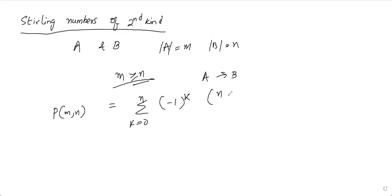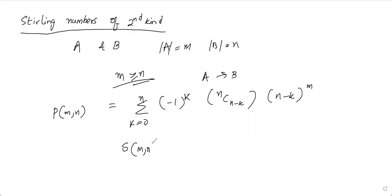The formula is m C (n minus k) times (n minus k) to the power m. This is the Stirling's number of the second kind, denoted by S of m comma n, which equals P of m comma n divided by n factorial.